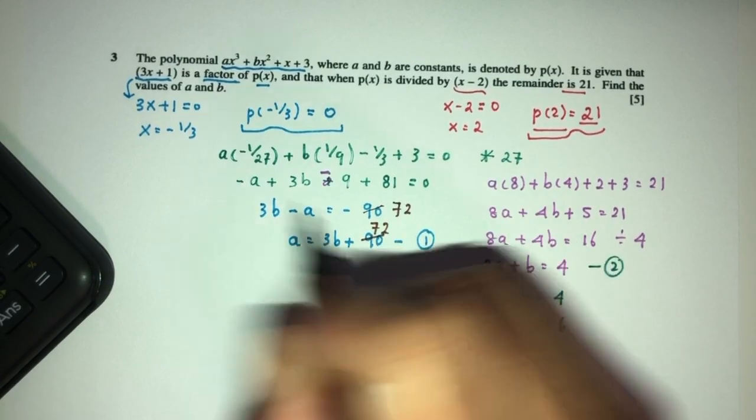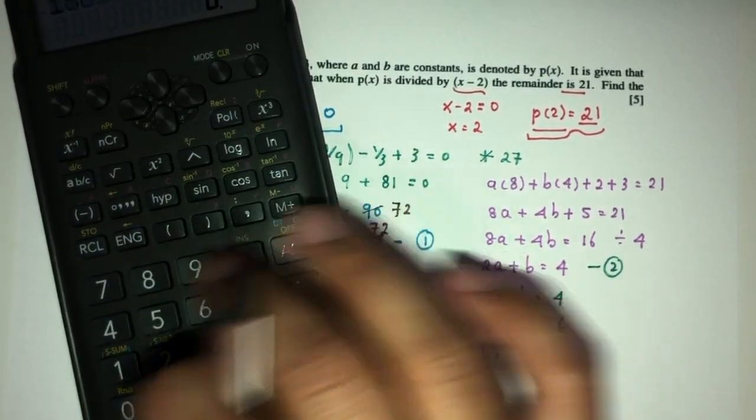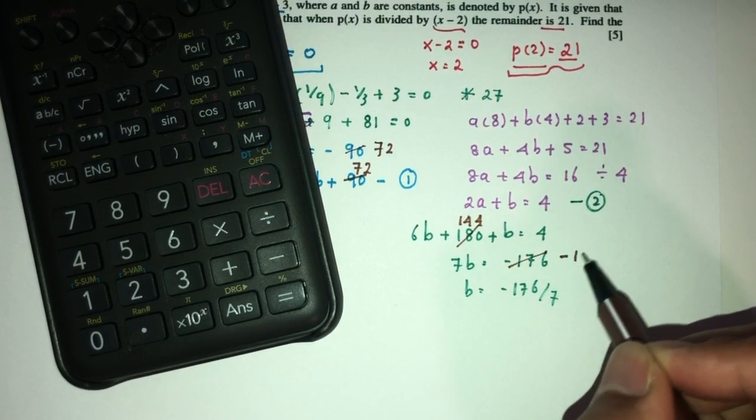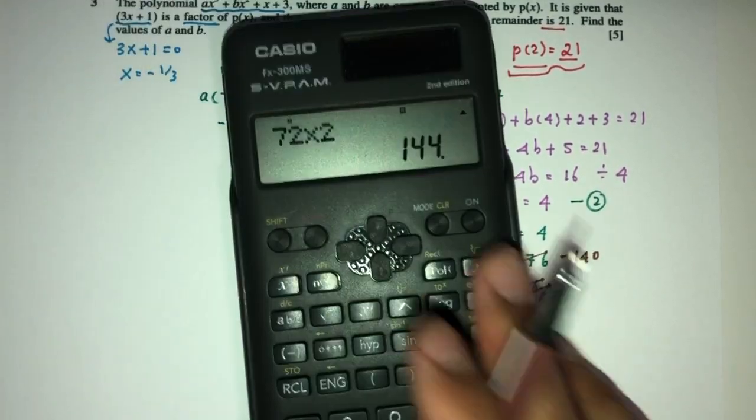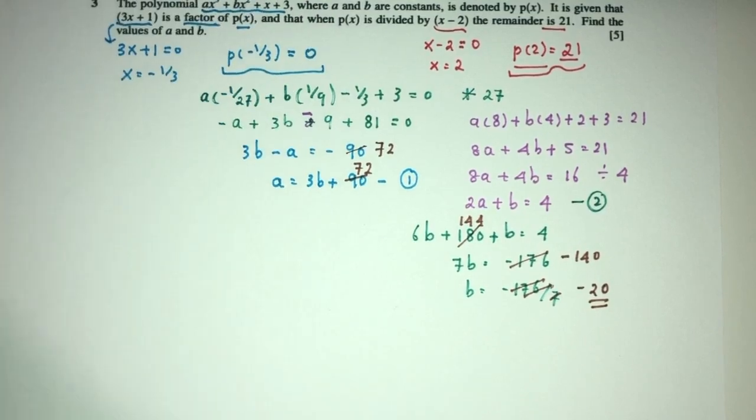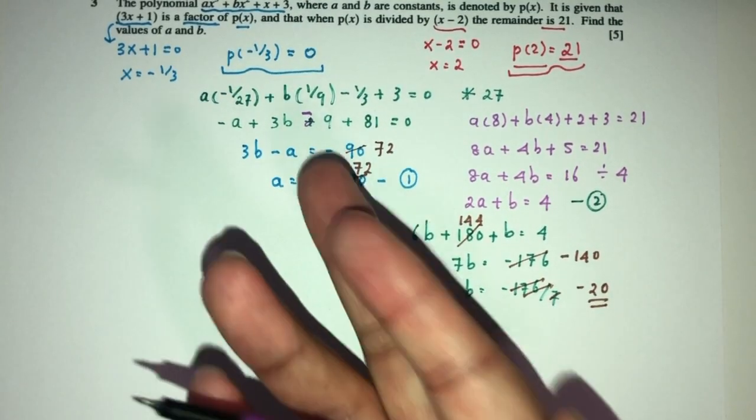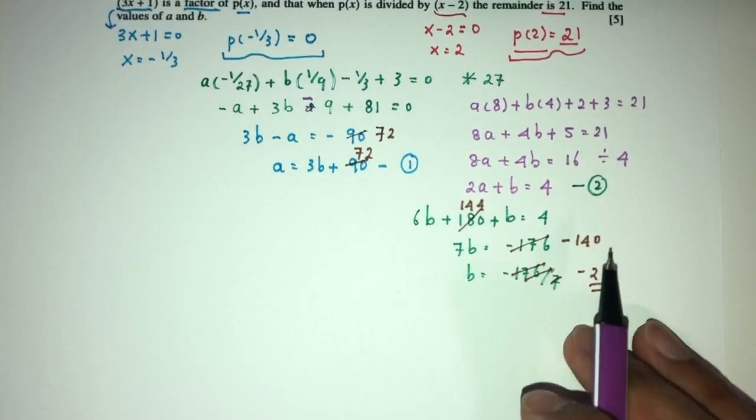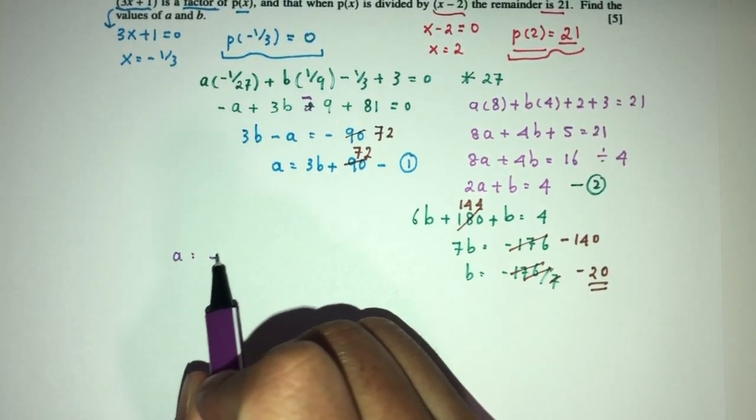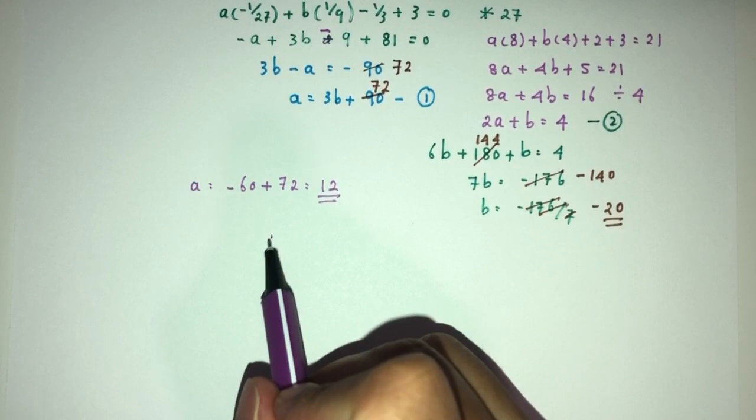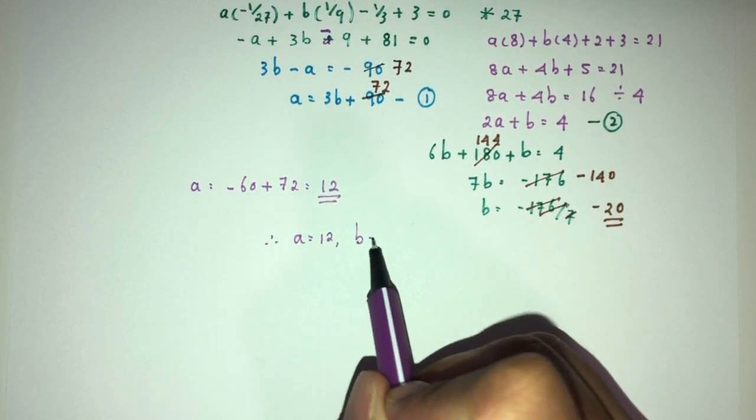To simplify, you will have 180 already, so 72 times 2 should be 144. Eventually here you will have -140 and b will be -140 divided by 7. That should be -20 as your value for b. Usually it will be integers. As you can see, I made a stupid mistake, but I was able to find this pretty easily because I know this is quite not possible. Now a will be 3 times b, which is -60 plus 72. That will be 12 for the value of a. So finally, a = 12 and b = -20. That is your question number three.